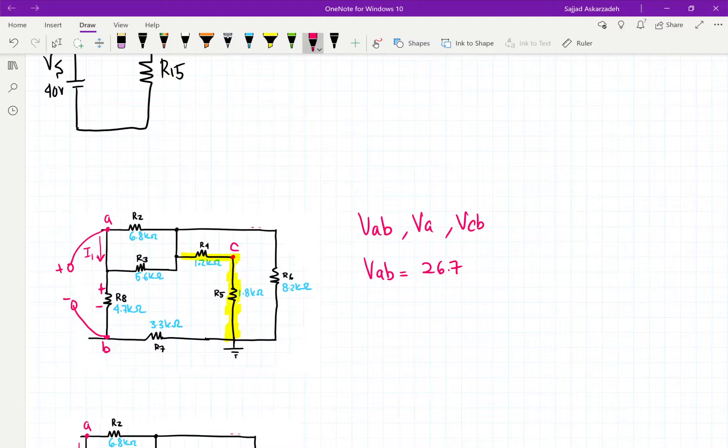And how do we know that it's 26.7 and not negative 26.7? So we can write down, we say that this is our loop. So this is our loop, and we're just going to go around.